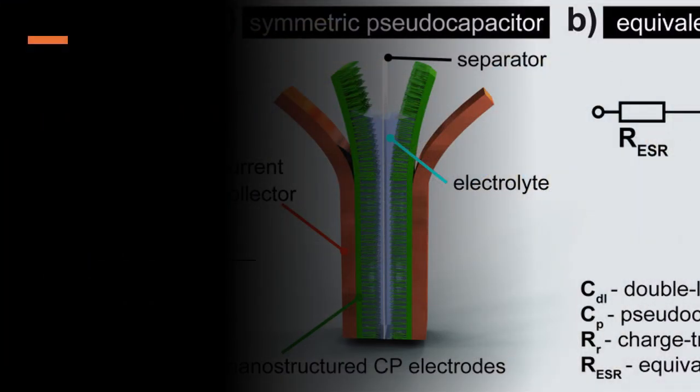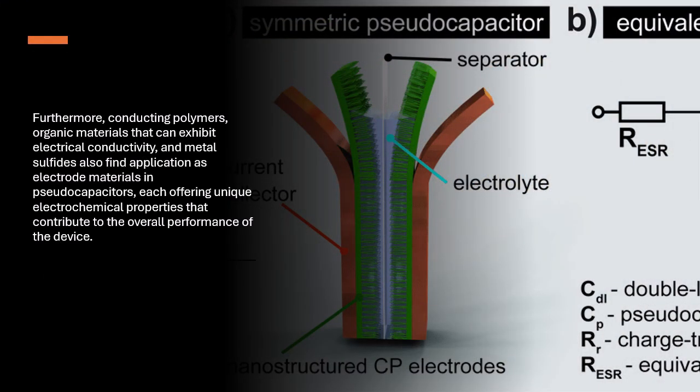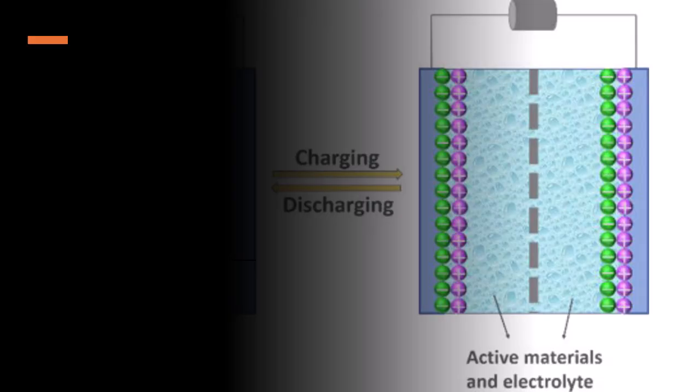Furthermore, conducting polymers, organic materials that can exhibit electrical conductivity, and metal sulfides also find application as electrode materials in pseudo-capacitors, each offering unique electrochemical properties that contribute to the overall performance of the device.